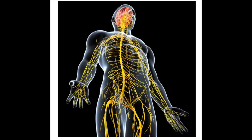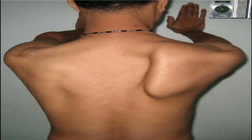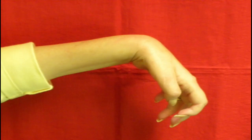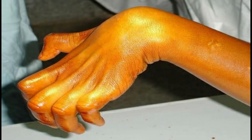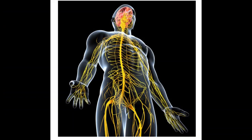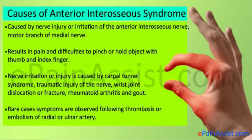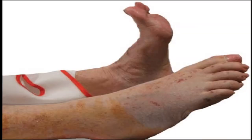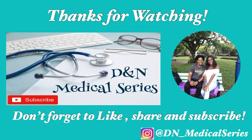Let's review everything: winged scapula is the long thoracic nerve of Bell; wrist drop is the radial nerve; claw hand is the ulnar nerve; the benediction sign is the median nerve; anterior interosseous syndrome is the anterior interosseous nerve — they cannot make the OK sign; and foot drop is the sciatic nerve. That's it for today's video. Drop questions in the comments, and don't forget to like, comment, and subscribe to our YouTube channel and follow us on Instagram. See you soon, bye!